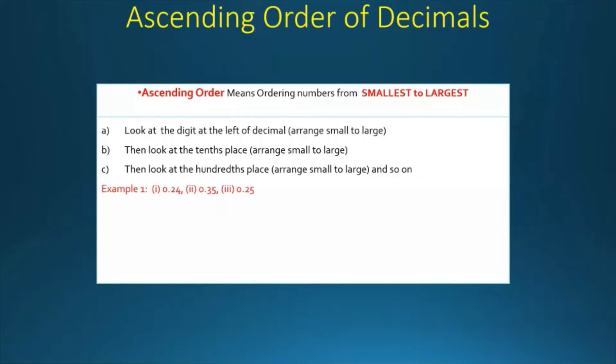For example 1, we have 0.24, 0.35, and 0.25. So the ascending order of this will be 0.24, 0.25, and 0.35.